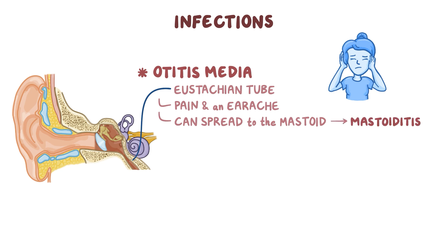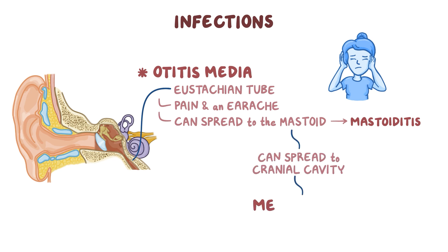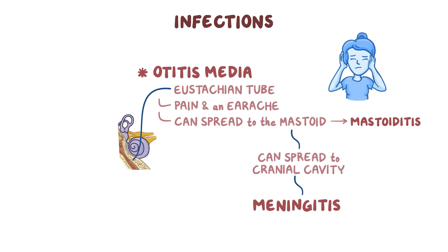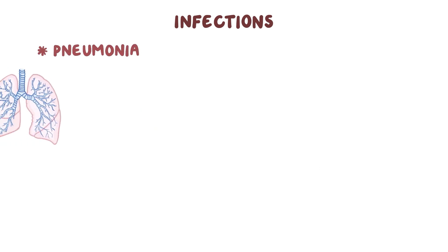Finally, from the mastoid antrum, the infection can spread to the cranial cavity, which is another way strep pneumoniae causes meningitis. However, the most common disease caused by strep pneumoniae is pneumonia.